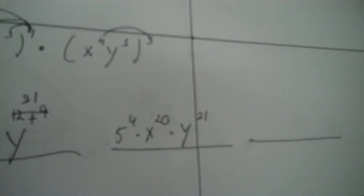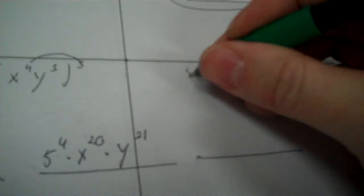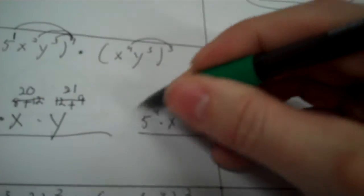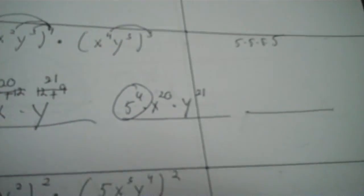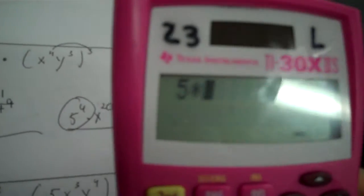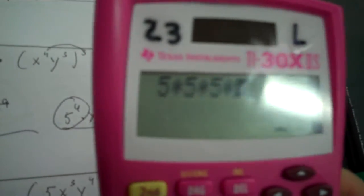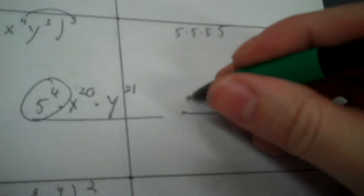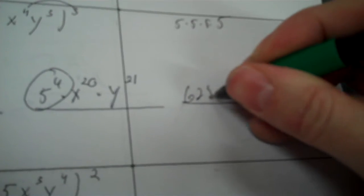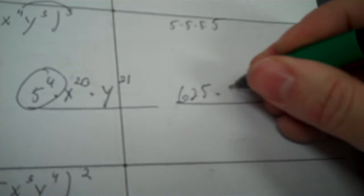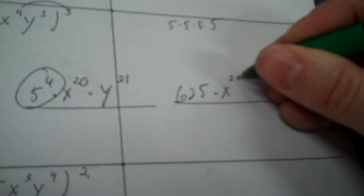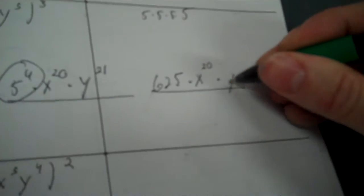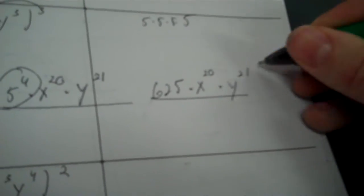I can figure out five to the fourth: five times five times five times five — that's the only one I can really simplify. That's 625. The letters I can't simplify because I don't know their values, so the final answer is 625 times x to the twentieth times y to the twenty-first.